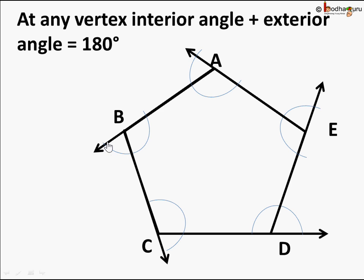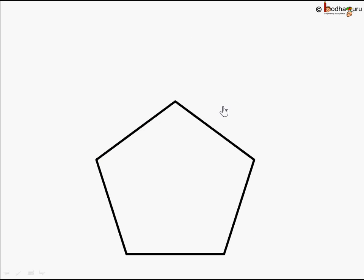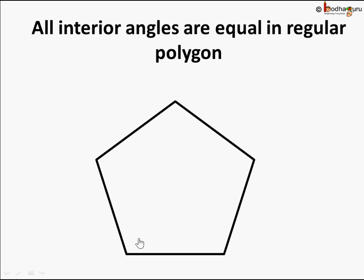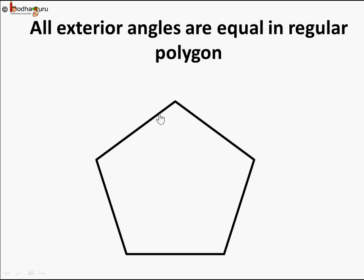The sum of the interior plus exterior angle is equal to 180 degrees at any vertex. Here I have drawn a pentagon with 1, 2, 3, 4, 5 sides. All its interior angles are the same, which also means all its exterior angles are also the same — since exterior angle equals 180 minus interior angle, and interior angle is the same for all vertices. So exterior angles are also the same for a regular polygon.